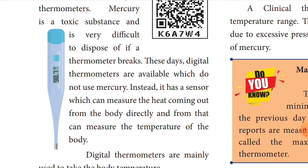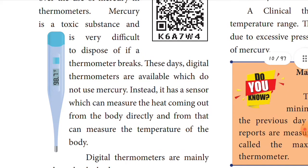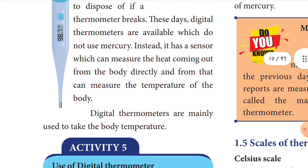Instead of mercury, the digital thermometer has a sensor which can measure the heat coming from your human body directly. See the digital thermometer — it reads 98.7 degrees Fahrenheit, which is the normal human body temperature. Sometimes it will also give the reading in Celsius.